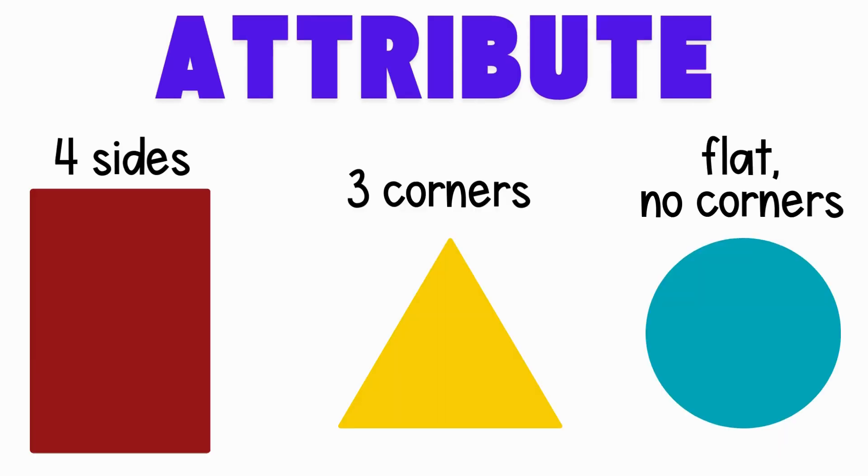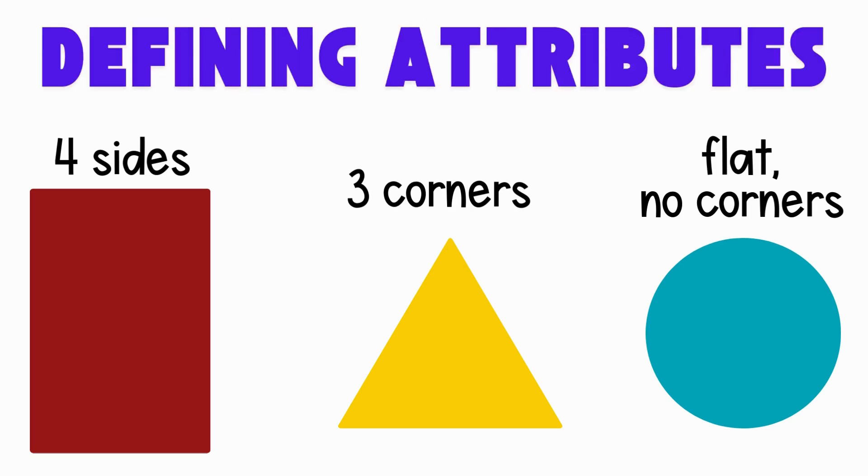Something that helps describe a shape is an attribute. A defining attribute is something that makes the shape what it is. It helps us name and recognize the shape. Examples of defining attributes are number of sides, number of corners or vertices, and straight or curved sides.